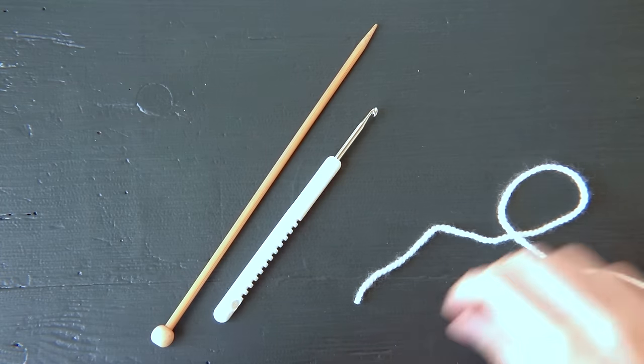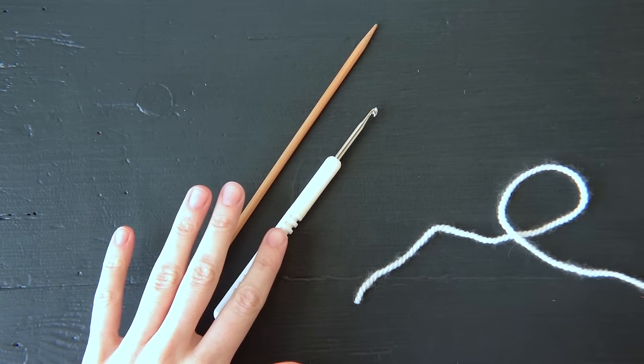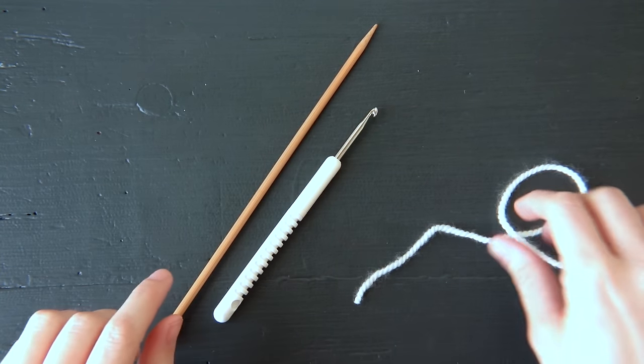I'm going to show you how to do a provisional cast on. For this method you'll need a crochet hook and a knitting needle and some yarn.